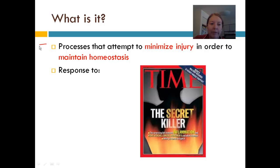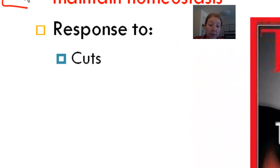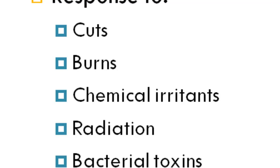If you want the perfect definition, here you go: inflammation is a process that attempts to minimize injury in order to maintain homeostasis. Some sort of injury — a cut, perhaps — brings your body away from homeostasis, so inflammation tries to bring it back to that balance level. This occurs in response to cuts, burns, chemical irritants, radiation, or even bacterial toxins.